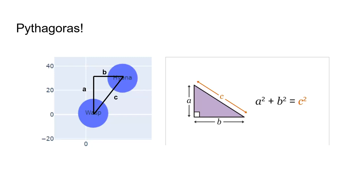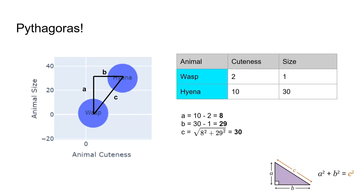I've taken two random points from our graph: wasp and hyena, and mapped them to Pythagoras' theorem. We're trying to work out the variable c, which quantifies how far away two things are from each other. A wasp has a cuteness of 2 and a size of 1, and a hyena has a cuteness of 10 and a size of 30. Applying the Pythagorean formula, a wasp and a hyena are 30 animal units away from each other.